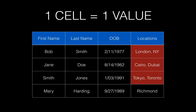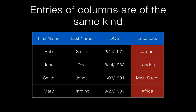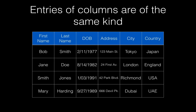Additionally, each cell — the intersection of a row and column in the table — must be single-valued, meaning we don't want to put something like a location column that has two different values in the same field. Every entry in a column must also be of the same kind, meaning that if we had a list of locations where some named countries, others named cities, and some even streets, we're not following the first normal form. Instead, we'll divide it up into multiple columns: an address column, a city column, and a country column — so all entries in our columns are of the same kind of data.